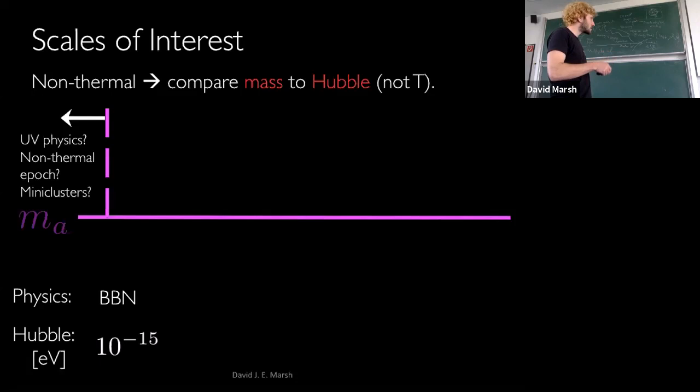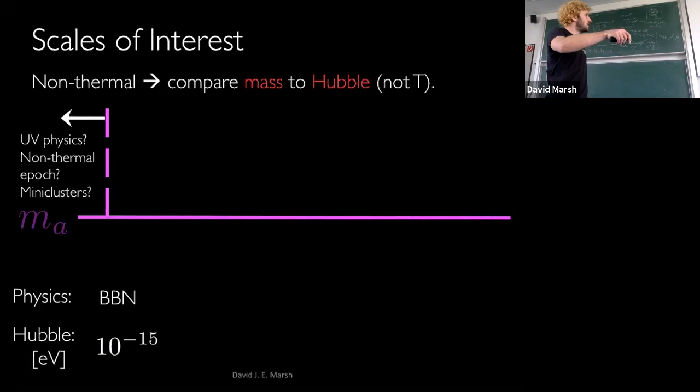This is very relevant for the QCD axion — essentially why we have the uncertainty about scenario A vs. scenario B, Peccei-Quinn symmetry breaking through the QCD axion. But anything lighter than 10^{-15} eV: we know the expansion history of the universe from here on. So there's no uncertainty to do with entropy production or expansion rates.